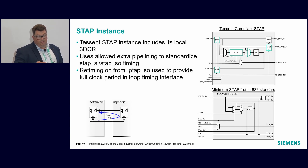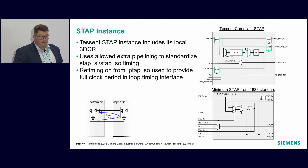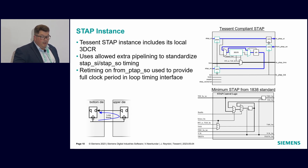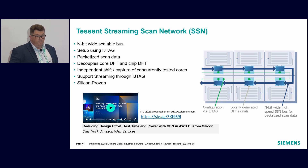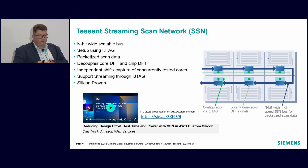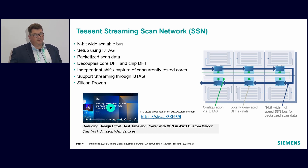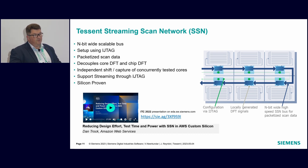The STAP provides a JTAG bypass through the actual TAP on the die itself. So when testing die number three, for example, you're utilizing the bypass path through the STAP on die number two. The one thing that is consistent between the dies is your overall ATPG test structures.